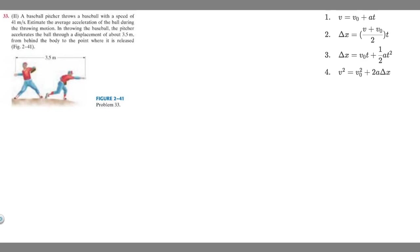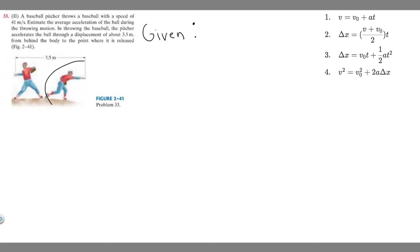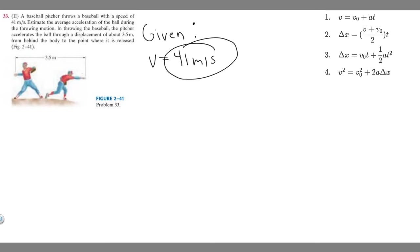Let's write down what we're given. The pitcher throws the ball at a speed of 41 meters per second. This is him at the start, and then he travels 3.5 meters, and this is when he throws the ball. At the end of the distance traveled, he throws the ball, which is his final velocity of 41 meters per second.